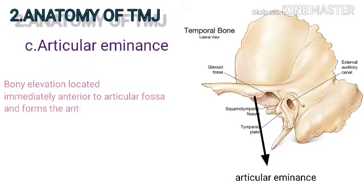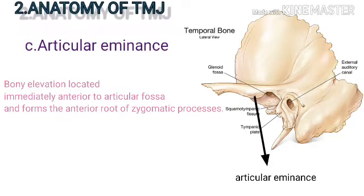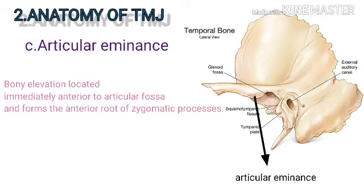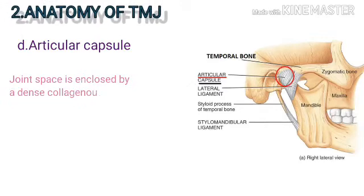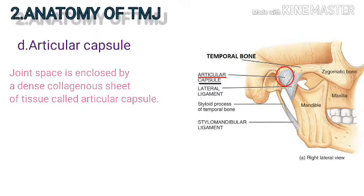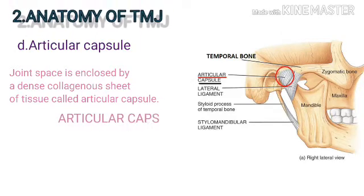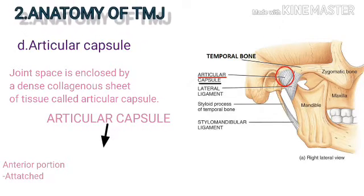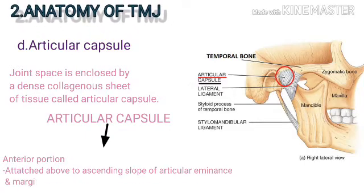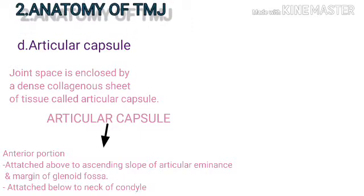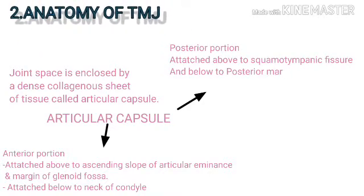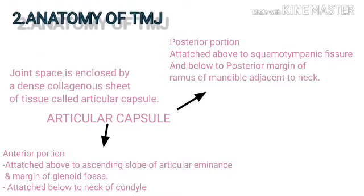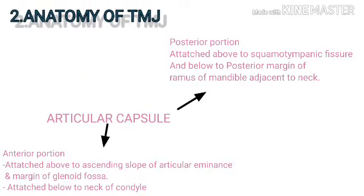The articular eminence is a bony elevation located immediately anterior to the articular fossa and forms the entire root of the zygomatic process. The articular capsule is a dense collagenous sheet enclosing the joint space. Anteriorly, it attaches above to the ascending slope of the articular eminence and margin of the glenoid fossa, and below to the neck of the condyle. Posteriorly, it attaches above to the squamotympanic fissure and below to the posterior margin of the ramus of the mandible adjacent to the neck.